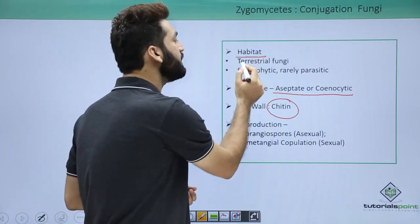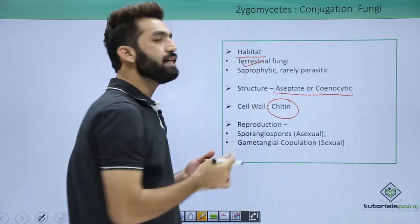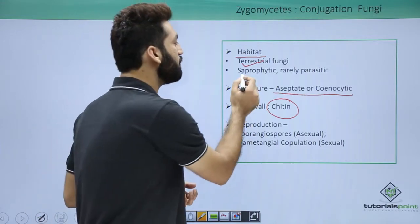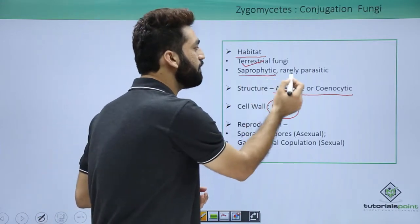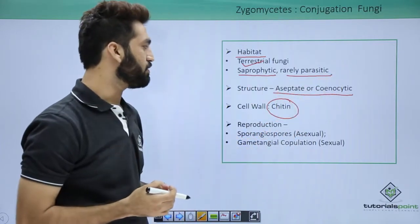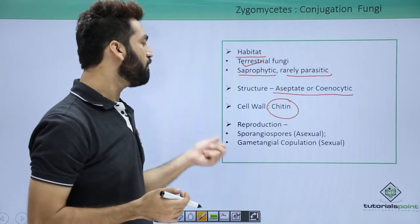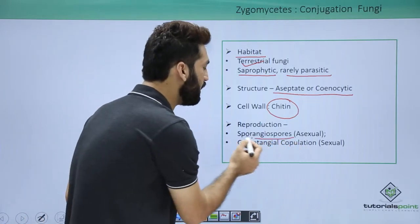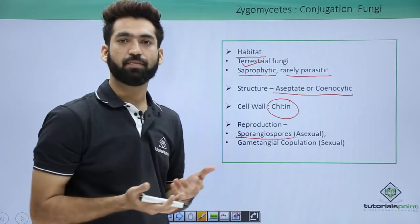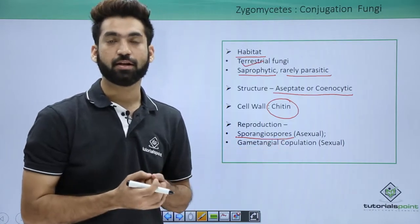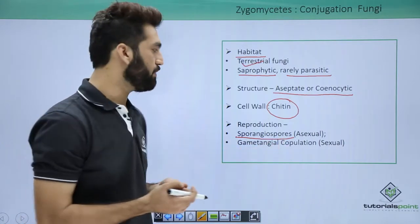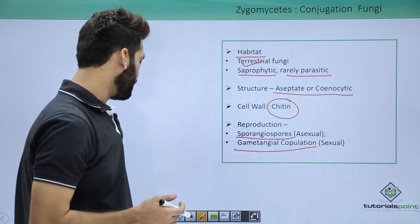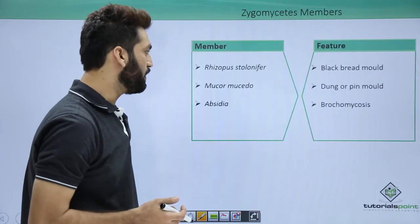Looking at habitat, zygomycetes are basically terrestrial — they are found on land. They are saprophytes and are rarely parasites as well. For reproduction, they divide with the help of sporangiospores, which were also present in oomycetes members. Sexually, they use a method called gametangial copulation.